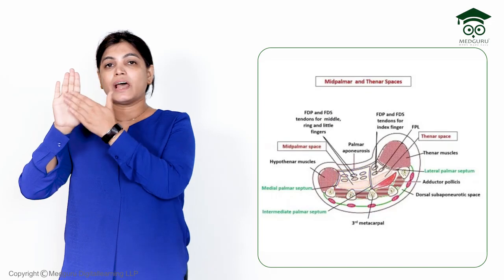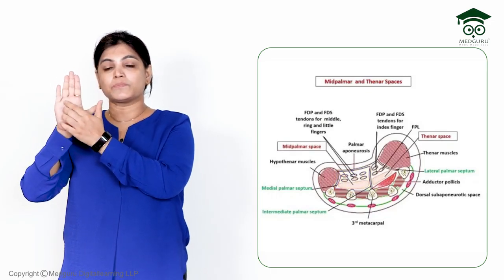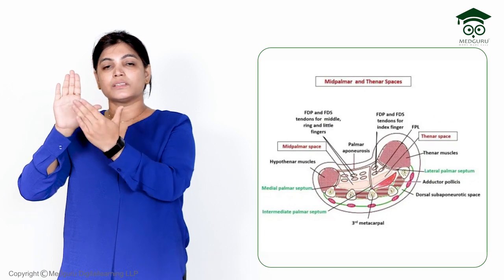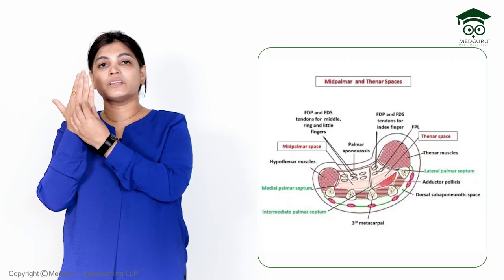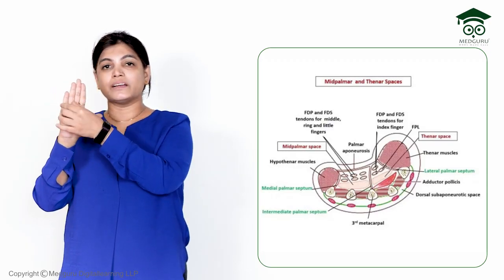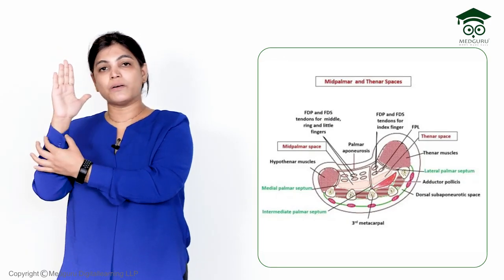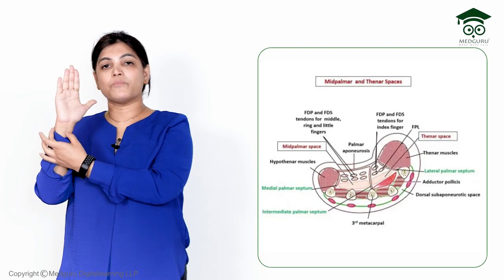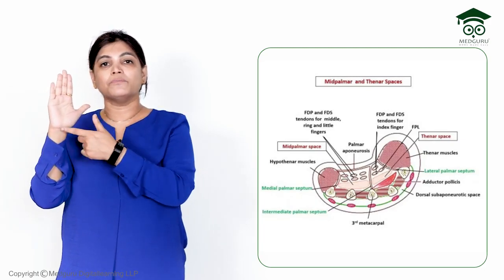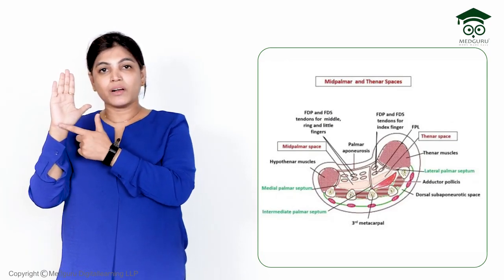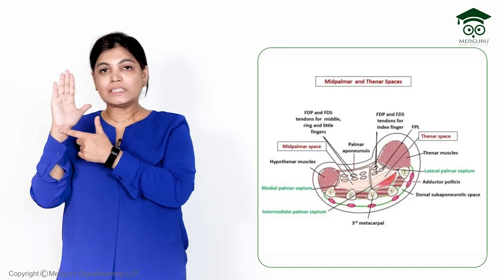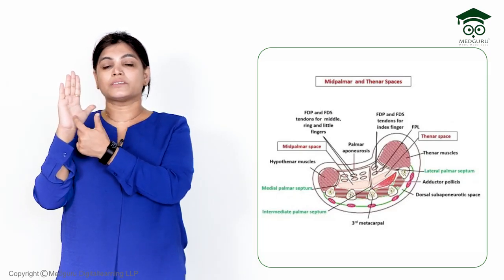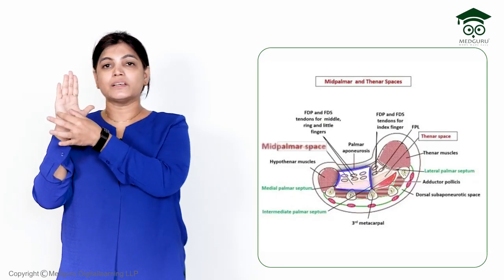The mid palmar space lies just below the medial fingers on the medial aspect. It has an anterior wall, a posterior aspect, a distal end, and a proximal end. The proximal end is toward the upper limb — toward the shoulder or elbow joint. So we have distal, proximal, anterior, and posterior boundaries, as well as medial and lateral boundaries.